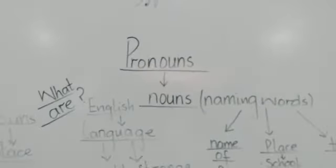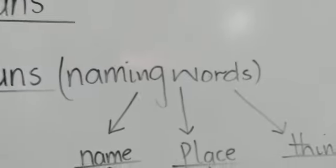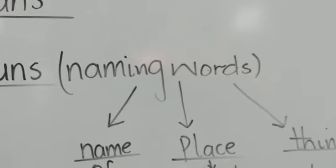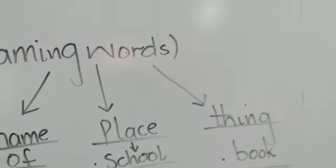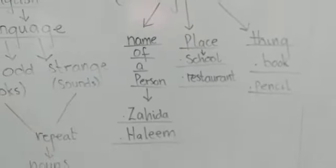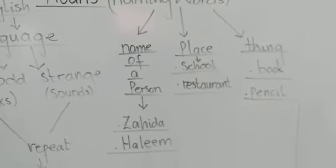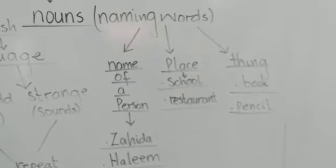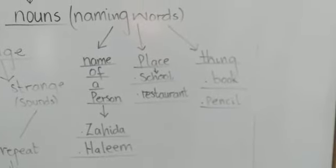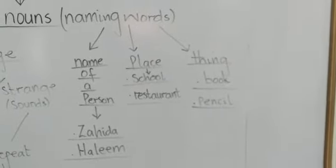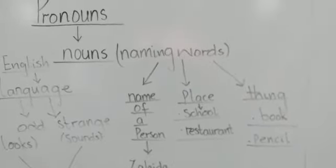For understanding the pronouns, it is very important to understand what nouns are. Nouns are the naming words — the name of a person, place, or thing. For example, the name of a person could be Zaida or Haleem. The name of a place could be school, restaurant, or any park. The name of a thing could be book, pencil, coffee cup, or teacup. These are the nouns.